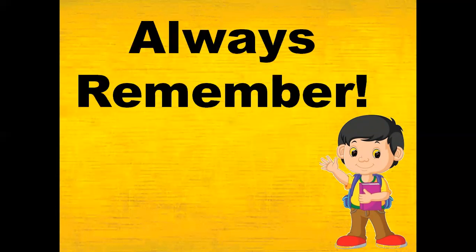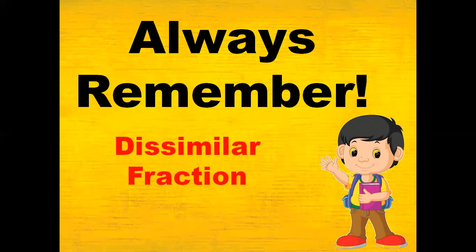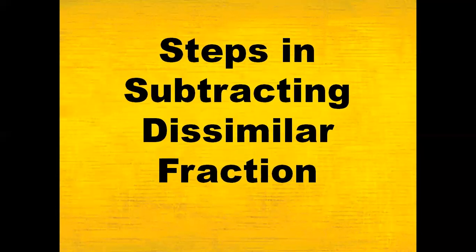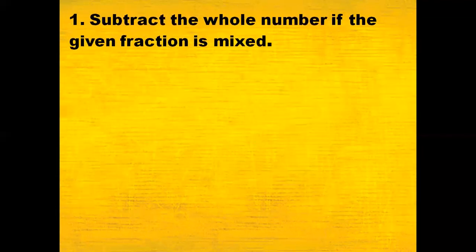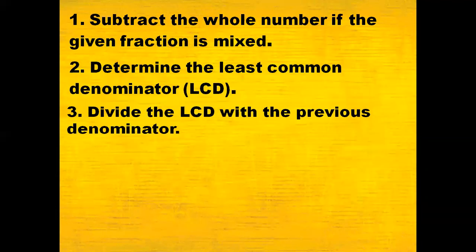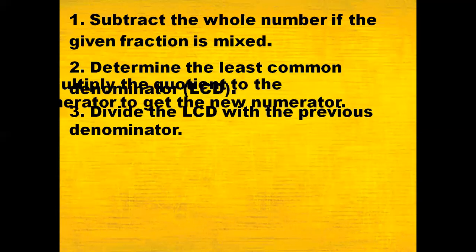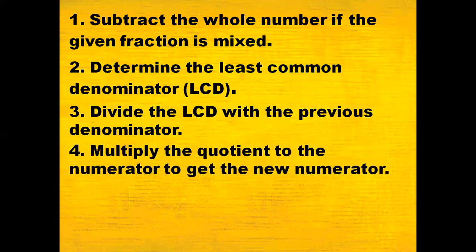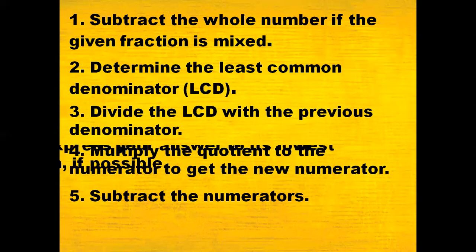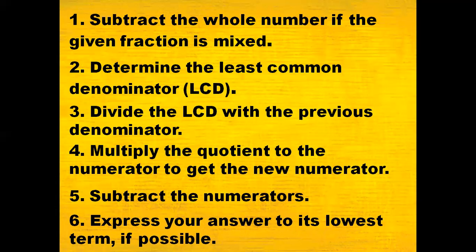Always remember: a dissimilar fraction is a fraction with different denominators. The steps in subtracting dissimilar fractions are: Step 1, subtract the whole number if the given fraction is mixed. Step 2, determine the LCD. Step 3, divide the LCD by the previous denominator. Step 4, multiply the quotient by the numerator to get the new numerator. Step 5, subtract the numerators. Step 6, express your answer in its lowest term if possible.